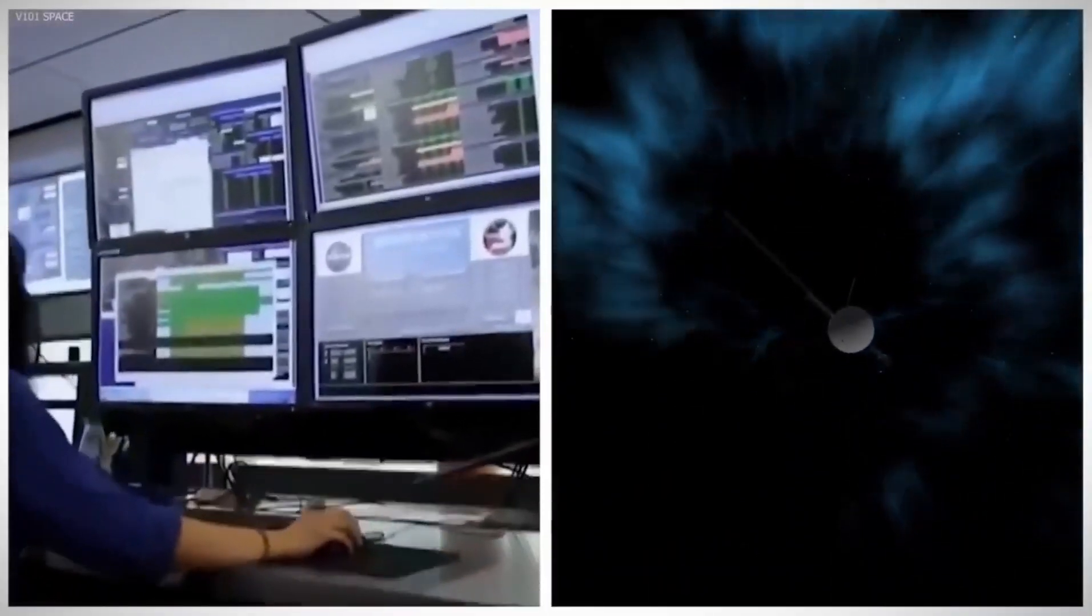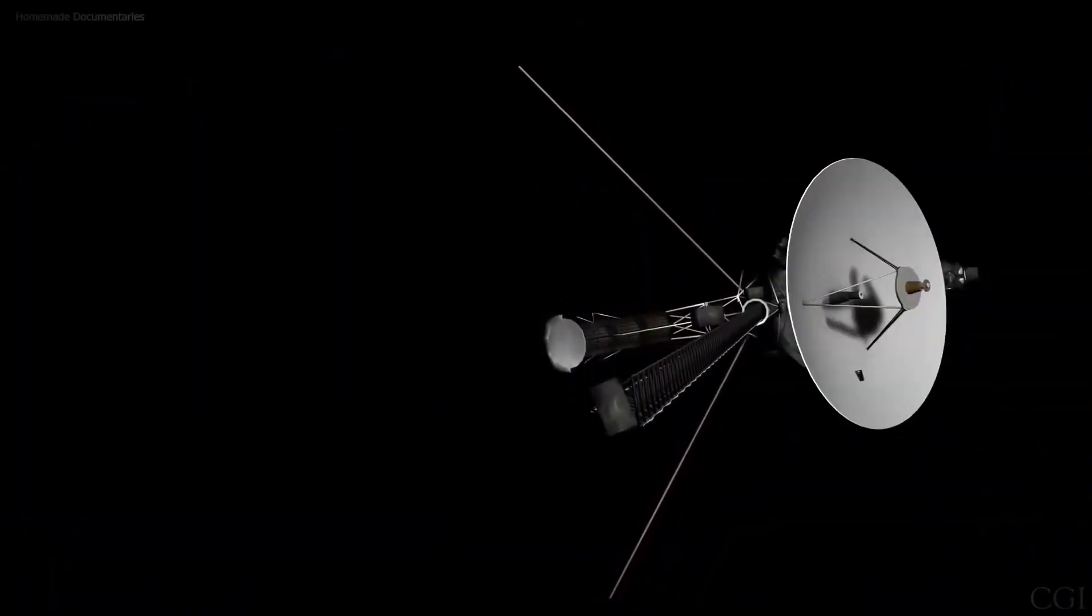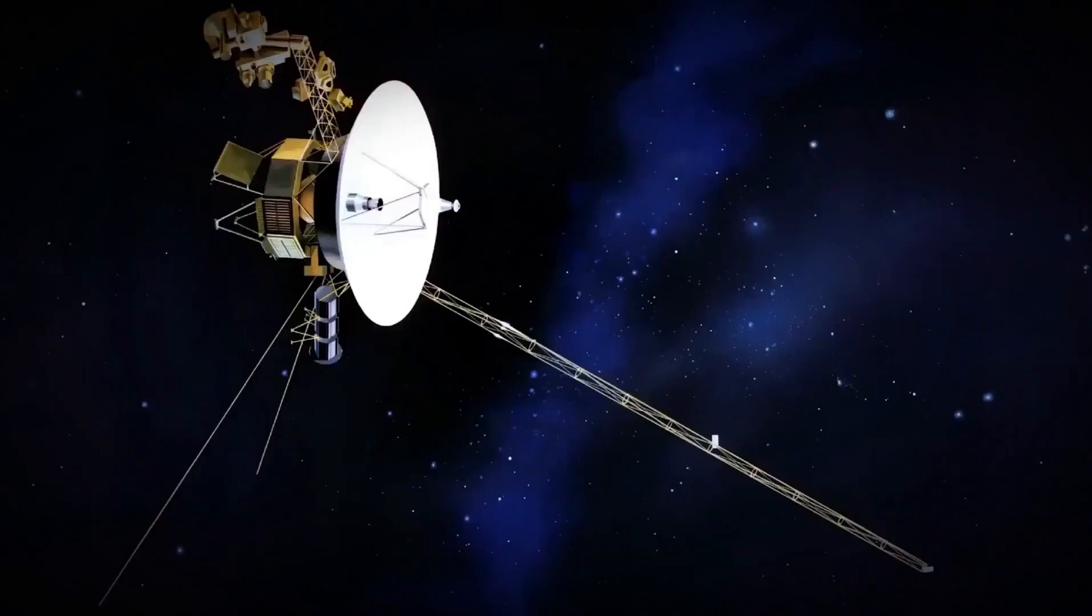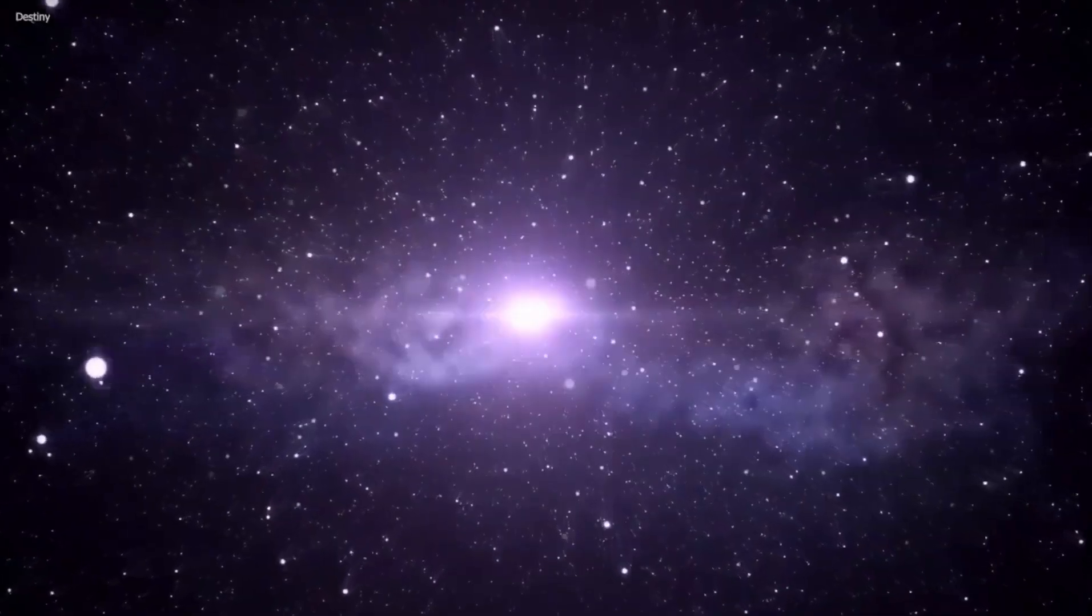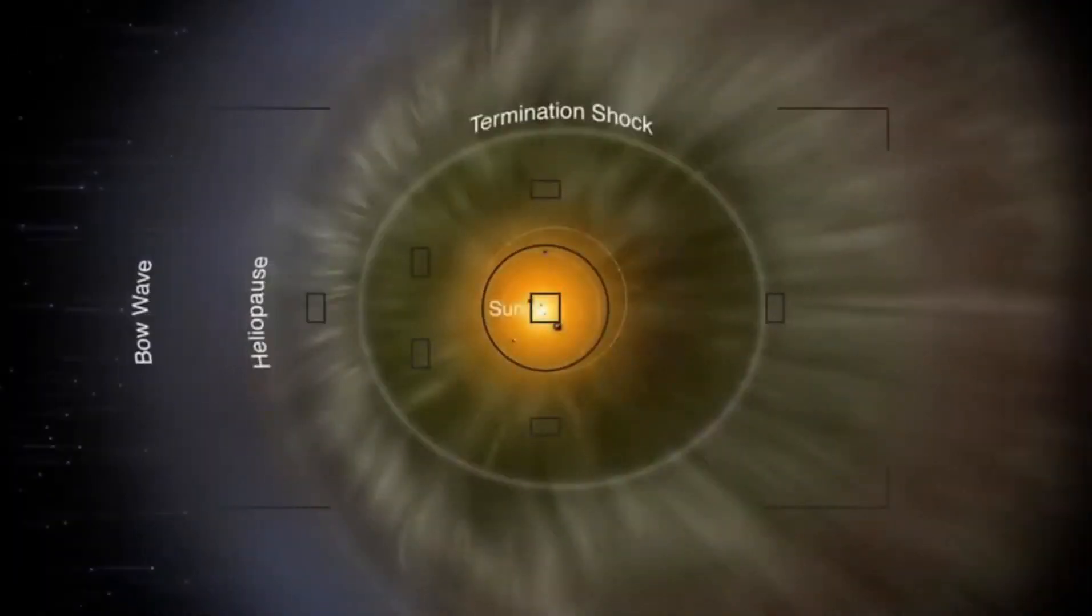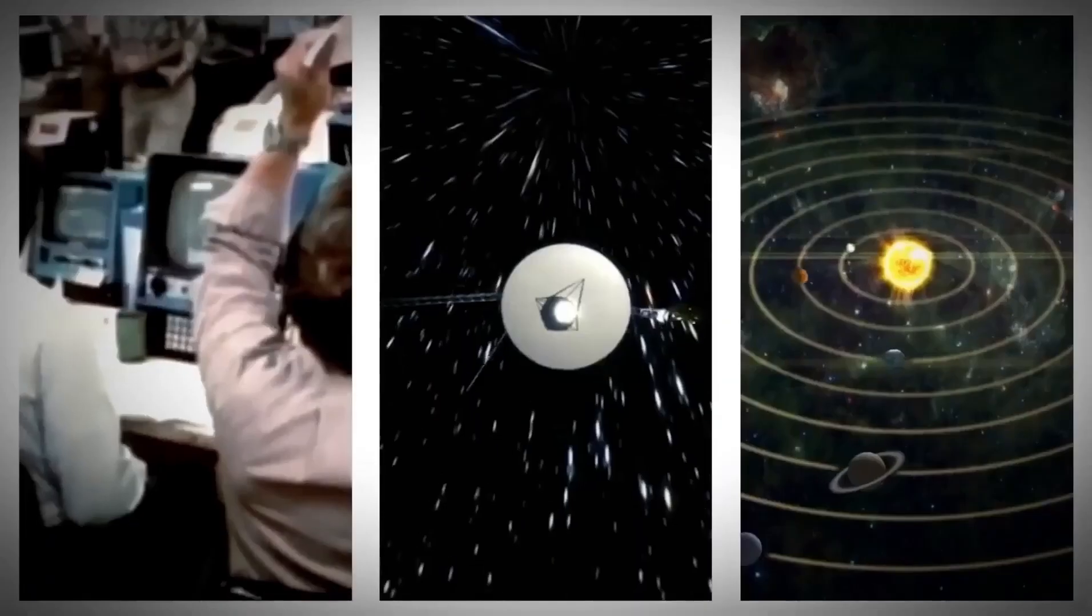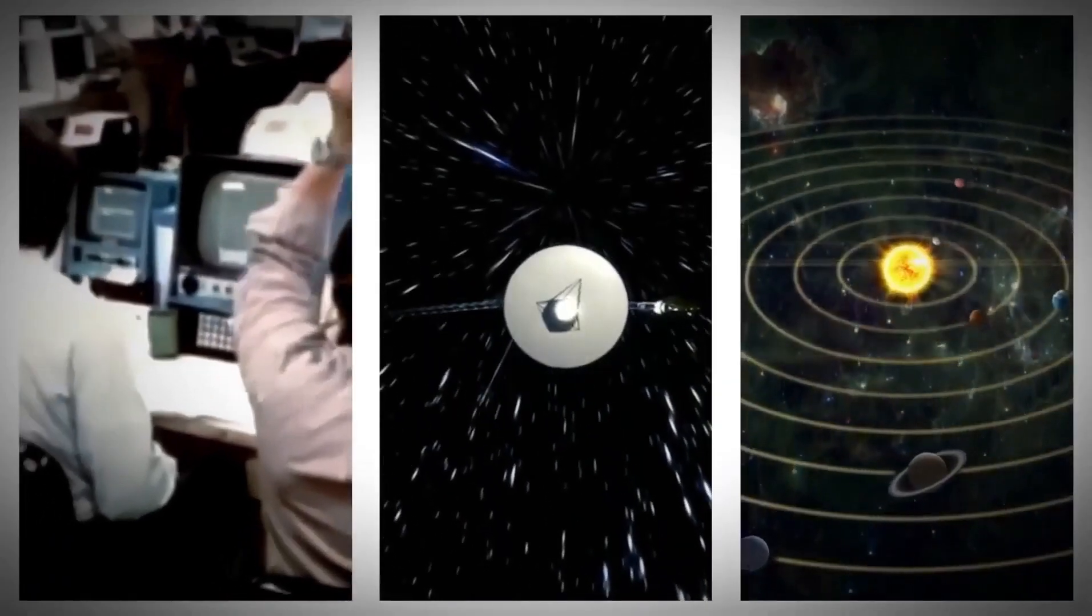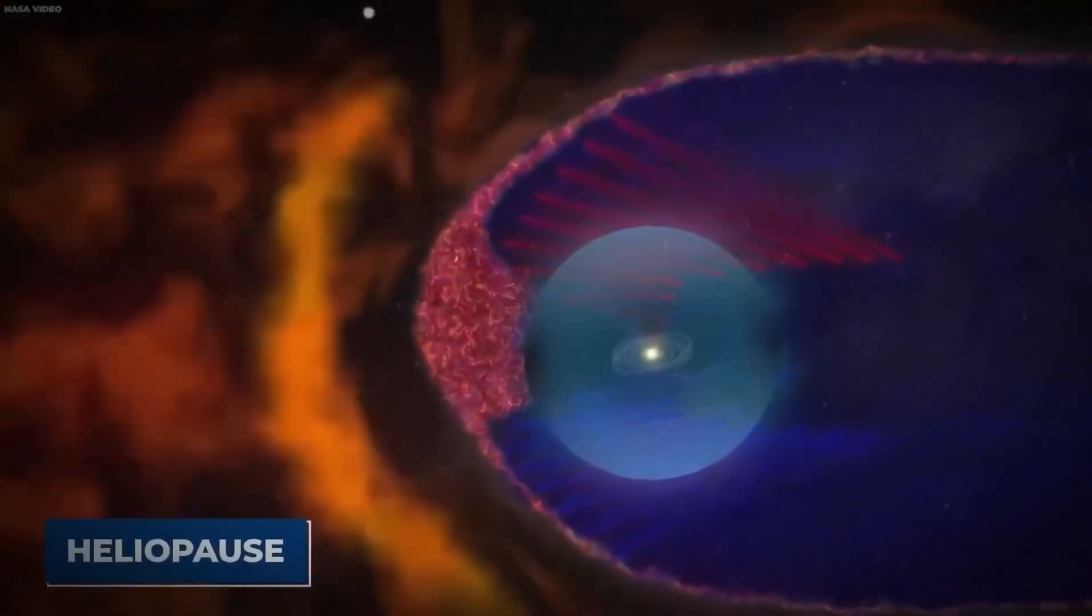As Voyager 1 ventured farther from the sun, its power source, three radioisotope thermoelectric generators, faced challenges due to diminishing sunlight. These devices convert plutonium-238 decay heat into electricity. The declining heat output led to reduced power, affecting various onboard systems. To conserve energy, non-essential systems and instruments have been deactivated or placed in a dormant state. However, further optimization or shutdown of critical systems may be necessary to prolong Voyager 1's operational life.